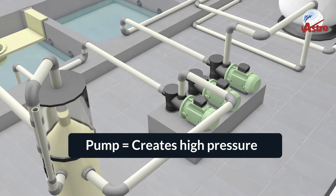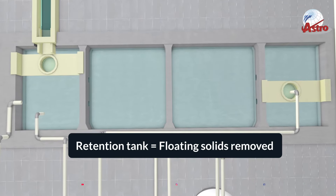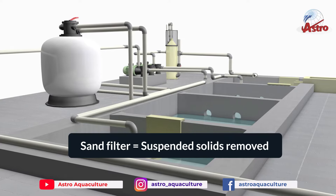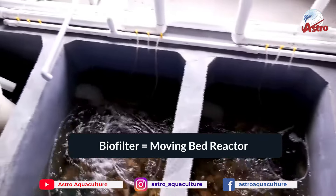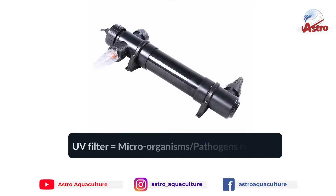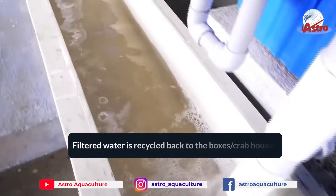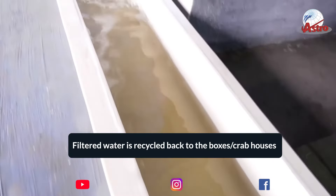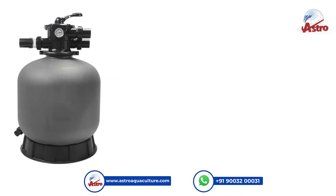The pump creates high pressure to move water to the retention tank, where floating solids are removed. The sand filter then removes suspended solids, followed by the bio filter using a moving bed reactor. Finally, the UV filter removes microorganisms and pathogens. The filtered water is then recycled back to the crab houses. Note: the sand filter must be backwashed regularly.